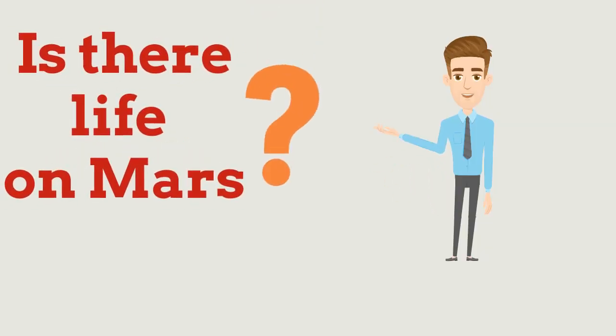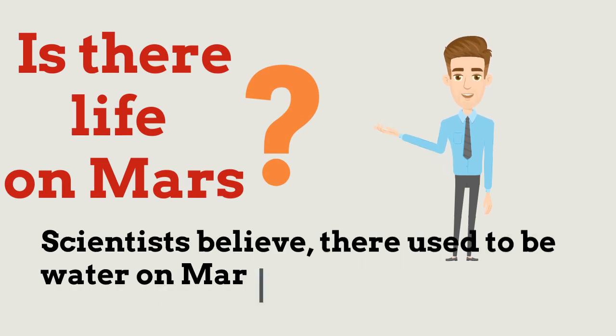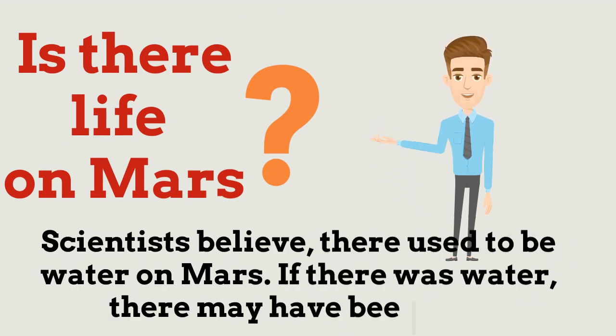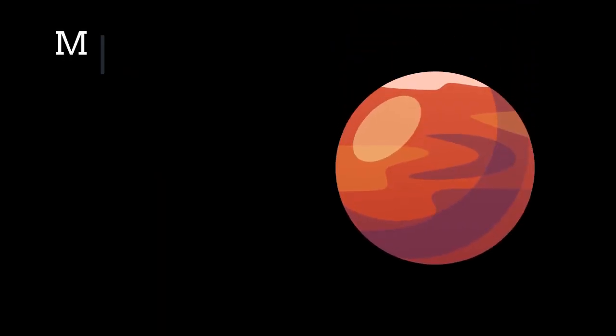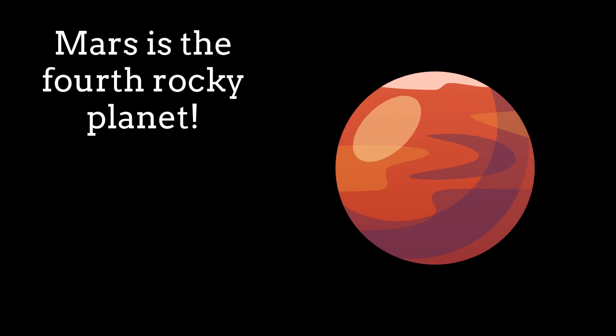Is there life on Mars? Scientists believe there used to be water on Mars. If there was water, there may have been life. Mars is the 4th rocky planet. Remember, we discussed there are 4 rocky planets. So Mars is the last rocky planet.